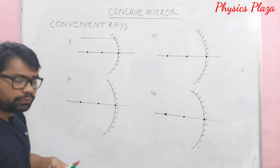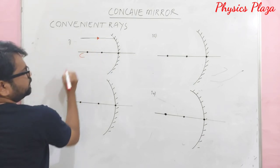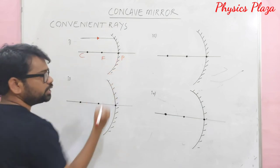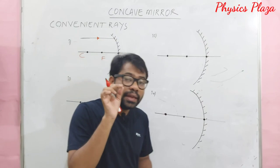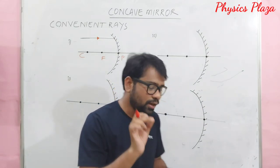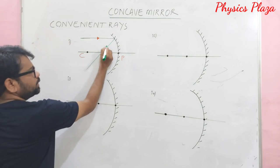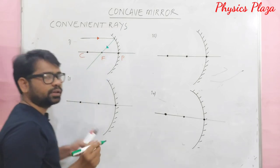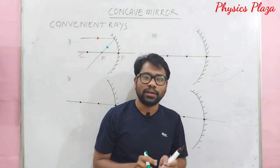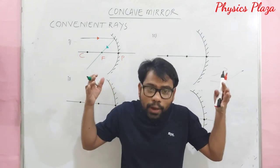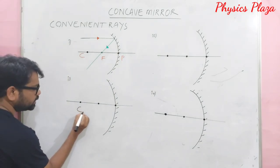First convenient ray: if any light ray is coming parallel to the principal axis of a concave mirror, after reflection it will pass through the focus. So if parallel light rays come parallel to the principal axis of the concave mirror, after reflection all those light rays must pass through the focus.